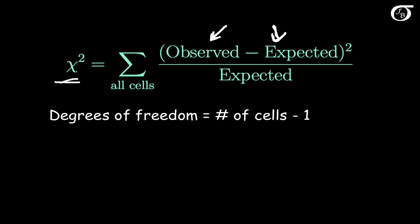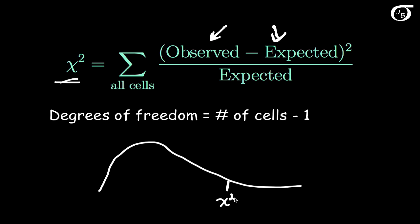For a given degrees of freedom, the greater the value of the test statistic, the greater the evidence against the null hypothesis. The p-value is the probability under the null hypothesis of getting the observed value of the test statistic or something even larger — in other words, the area to the right of our test statistic under a chi-square distribution with the appropriate degrees of freedom.